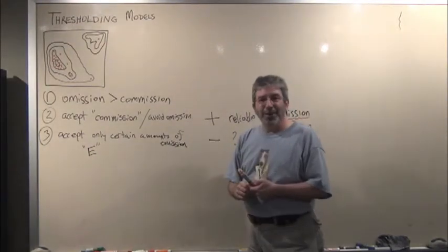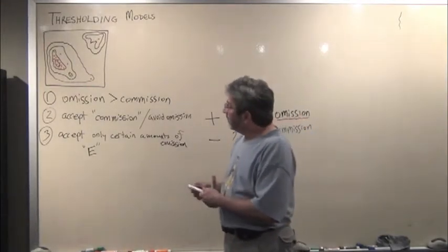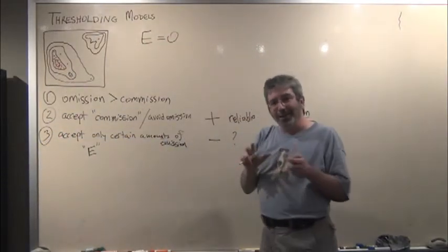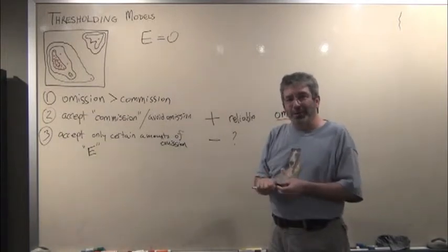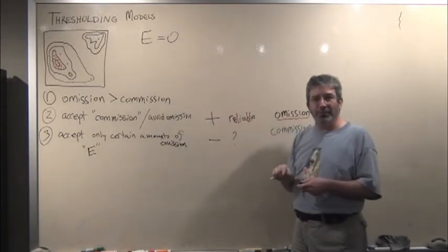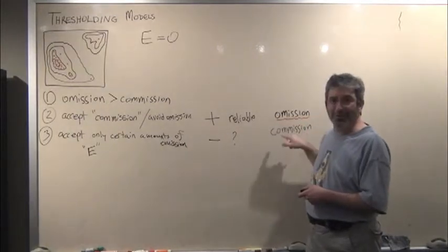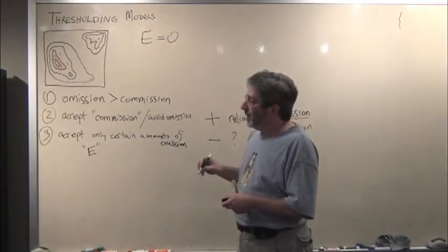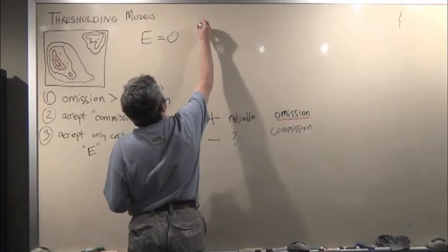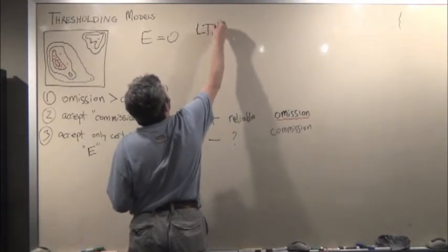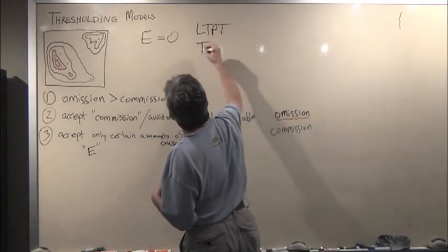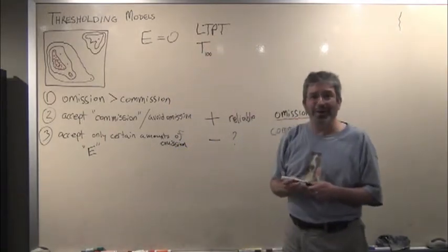Now we can finally talk about thresholding. Let's consider two possibilities. If E equals zero, we're not considering all of the possible techniques for thresholding, we're just considering the one that fits well with our conceptual framework, which is that omission error is worse than commission error. So Pearson et al. in 2007 offered the least training presence thresholding approach, which I'm going to term threshold that includes 100% of the training data.